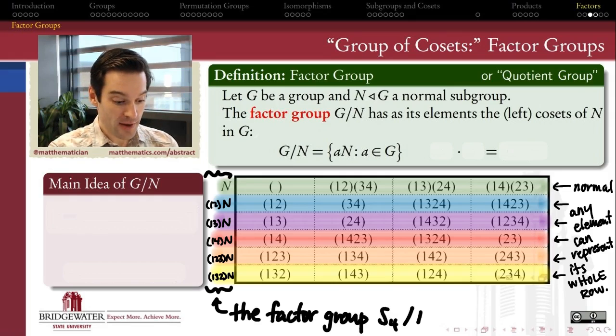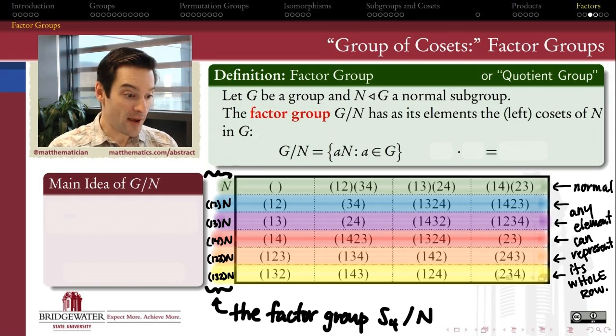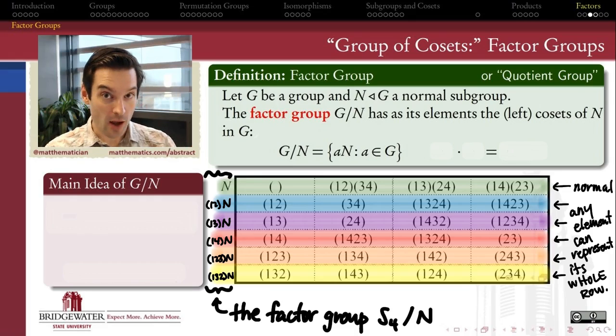And so the factor group here is a group of six elements. What we don't know, based on what's written down here, is what group of six elements that we might already know about is this factor group isomorphic to? So we want to answer that question next, but for now, we know it's a group that has six elements.